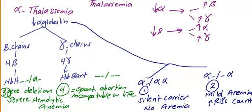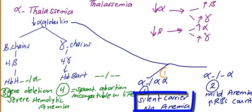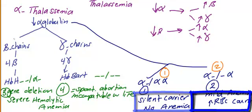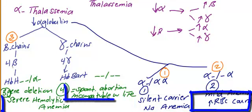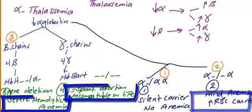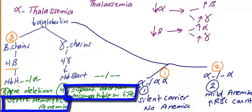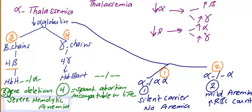To summarize: one gene deletion — silent carrier; two gene deletion — mild anemia; three gene deletion — Hemoglobin H, severe hemolytic anemia; four gene deletion — Hemoglobin Bart's, spontaneous abortion, incompatible with life.